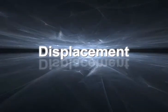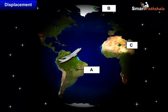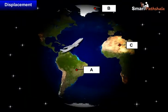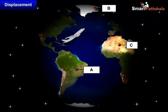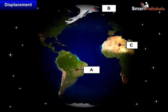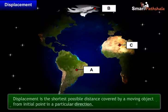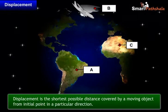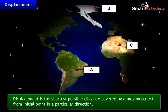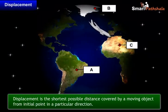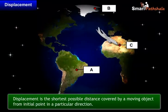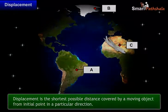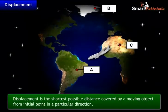Another quantity used to determine distance is displacement. Displacement is the shortest possible distance covered by a moving object from its initial point in a particular direction.